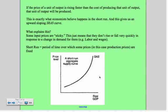Let's start by talking about the short run aggregate supply curve. If the price of a unit of output is rising faster than the cost of producing that unit of output, a producer who's looking to make a profit is going to produce that unit. This is why economists believe the short run aggregate supply curve slopes upward.